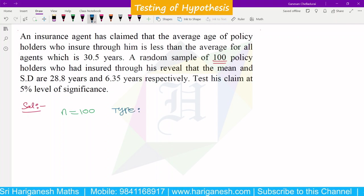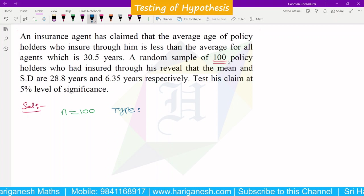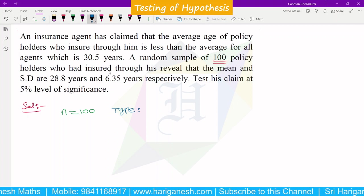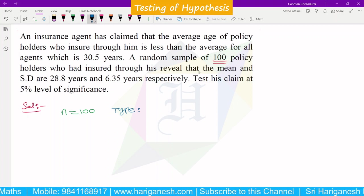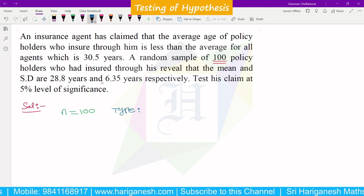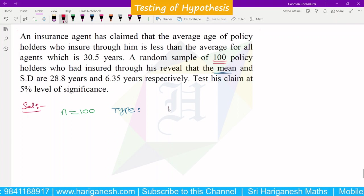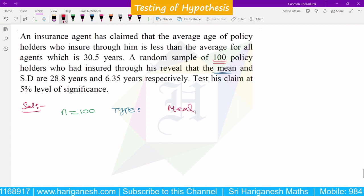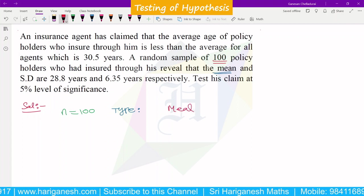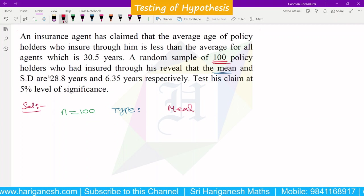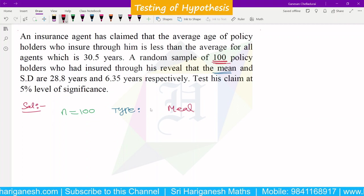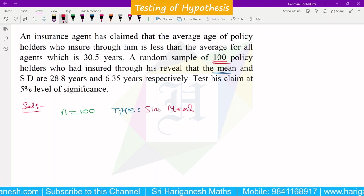Once large sample is identified, the type of problem is clear. A random sample of 100 policy holders who had insured through him reveal that the mean and standard deviation - the mean value is given. This is single mean, not difference of mean. Single mean is the type of problem.